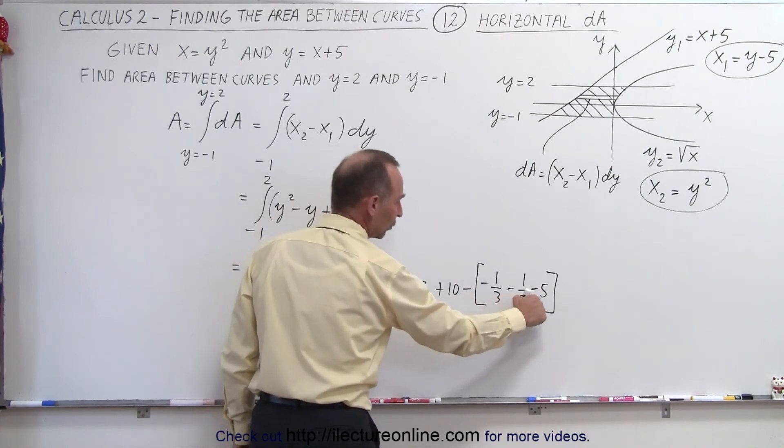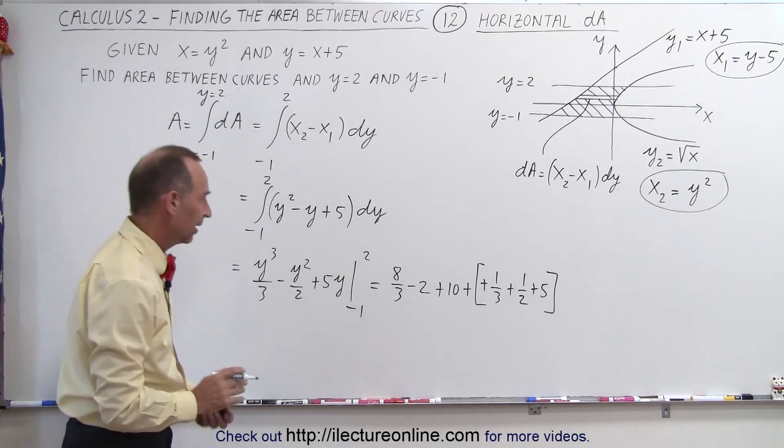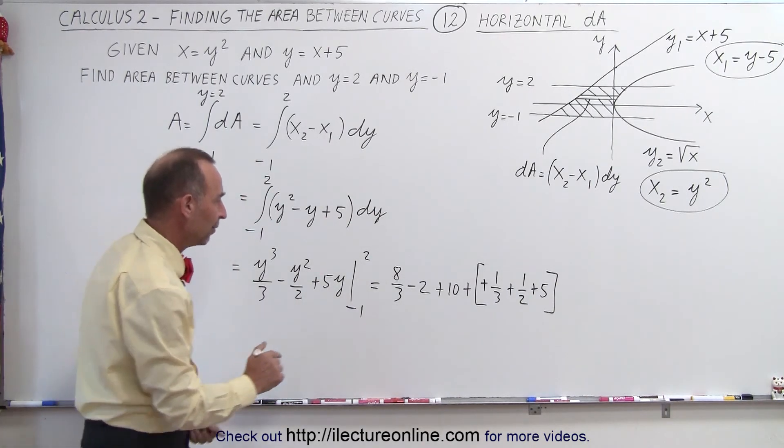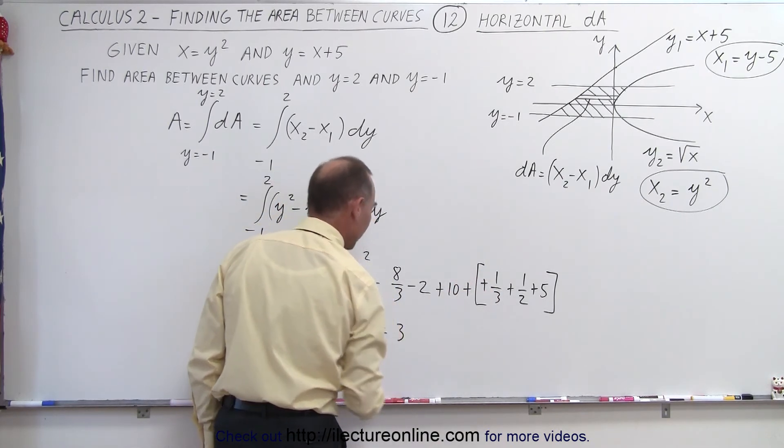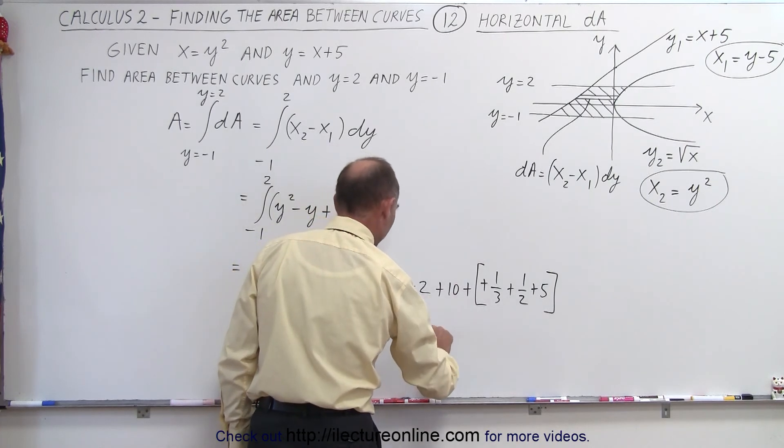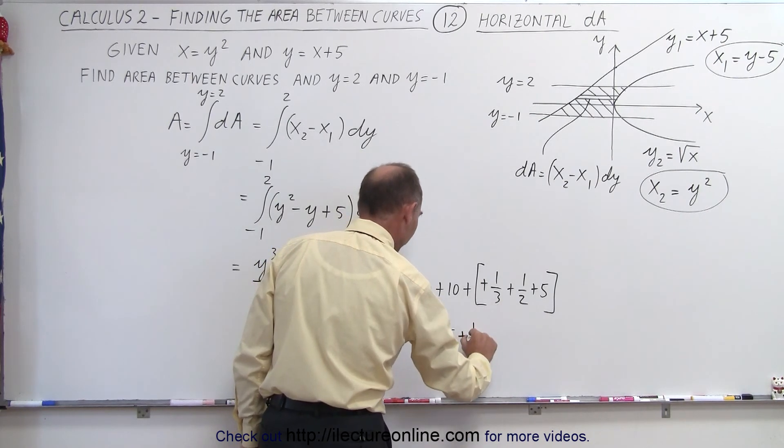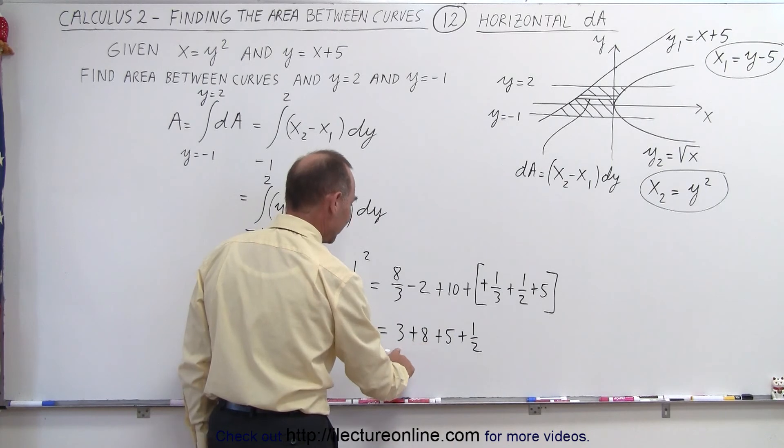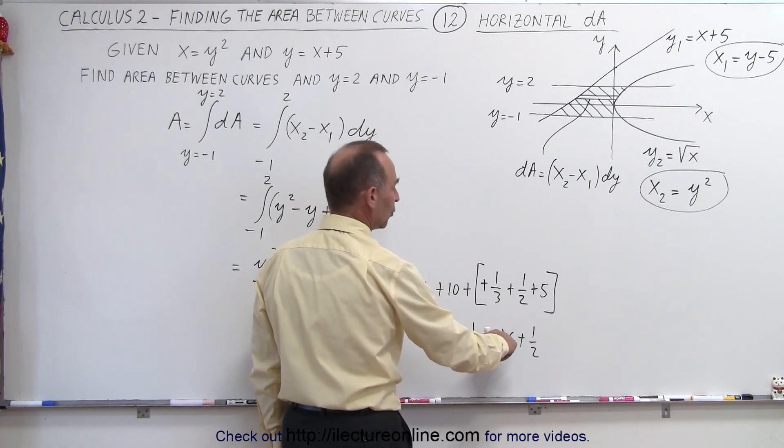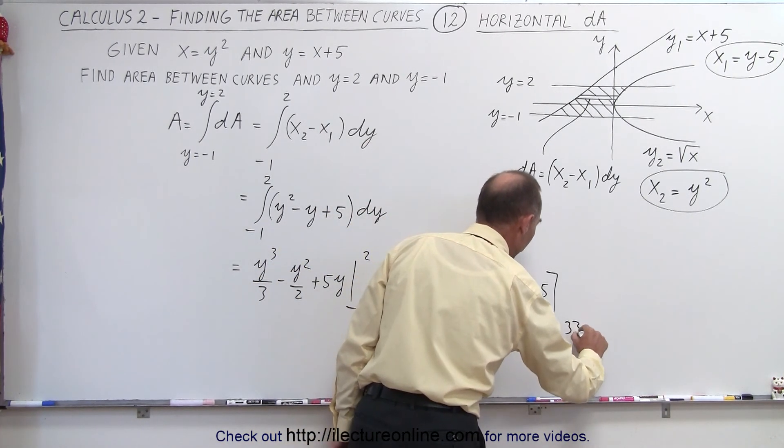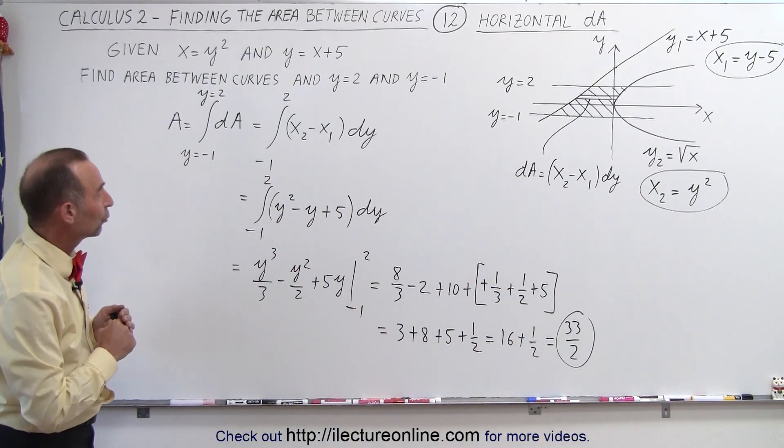But notice that this negative will cancel out all those negatives, so make that positive, positive, positive, positive. Let's simplify. So here we have 8 thirds plus a third, that's 9 thirds, which is 3, minus 2 plus 10, that would be plus 8. Then we have plus 5, and plus 1 half. So that will be 13, 16 and a half, so it's equal to 16 plus 1 half, or 32 halves, or 33 halves, is one way to write it. And that will then be the area between those two curves.